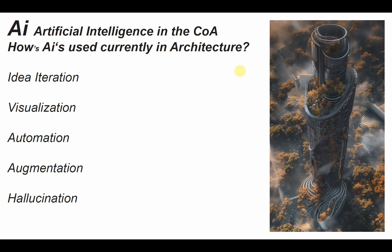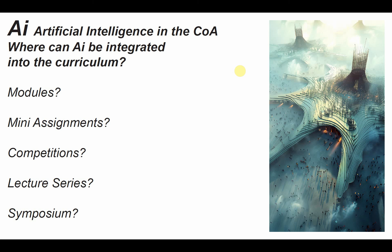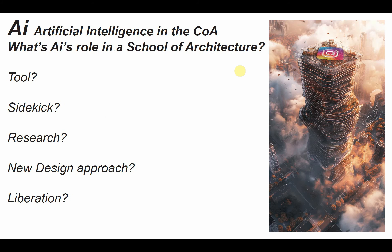Hallucination is the term that describes when computers dream — when they generate something outside of their training. These hallucinations can spark novel ideas for architects. So I present the question: where can AI be integrated into an architecture curriculum? Is it through modules taught during a design studio by experts? Is it through short mini assignments that leverage AI to meet the brief? Is it through a competition possibly sponsored by a donor? Is it through a lecture series where experts present how they use AI? Is it through a symposium where AI work is on display? We already see AI being used in research — will it be used more?